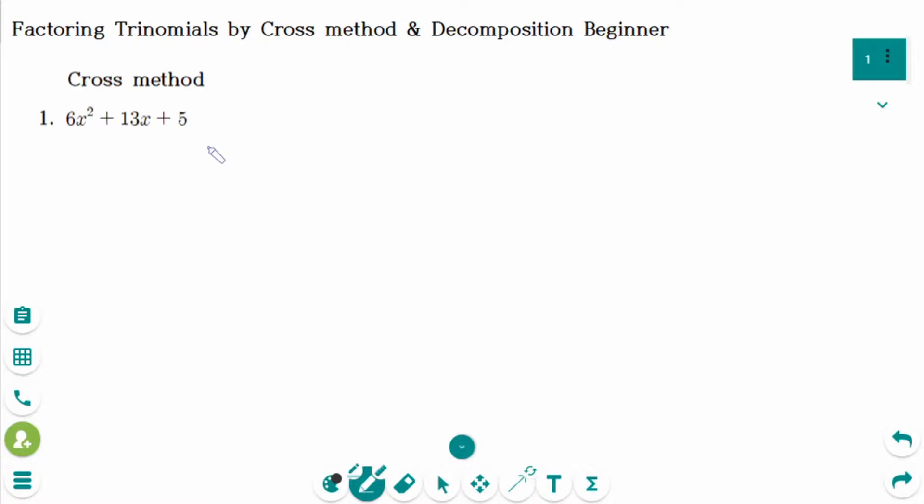This is the first question. 6x squared can be expressed as the product of 2x and 3x, and 5 can be expressed as the product of 1 and 5.